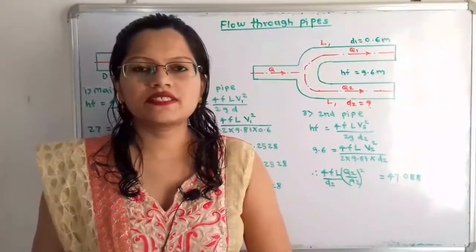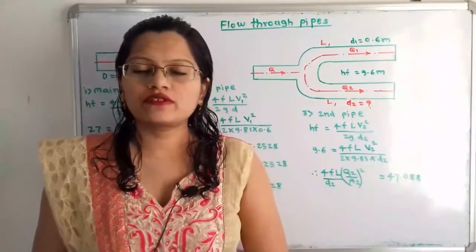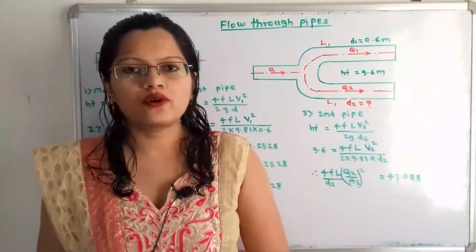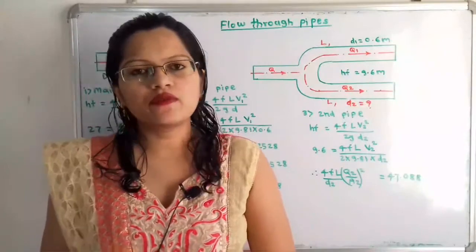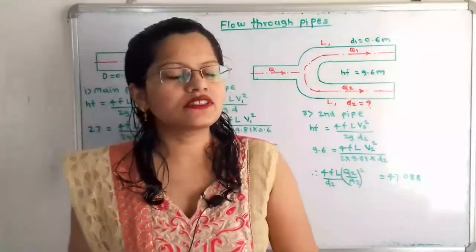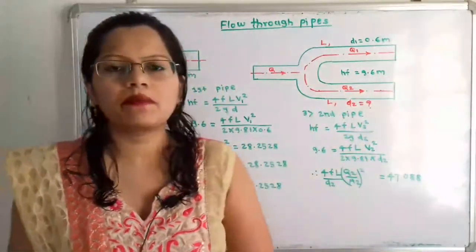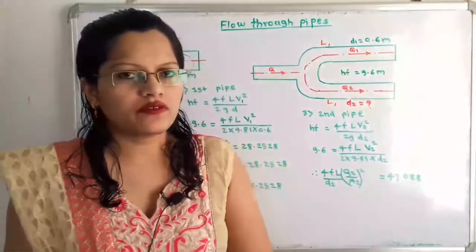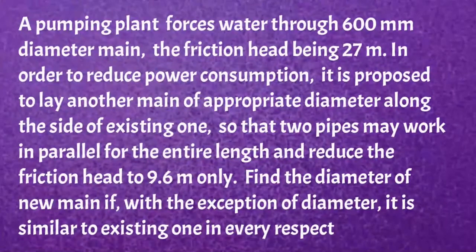Hello friends, this is Priyanka. Today we are going to solve a problem on flow through pipes. In this video, we are going to find out what is the diameter of a connected pipe for a given loss of head. So first, I will read what is the given problem.